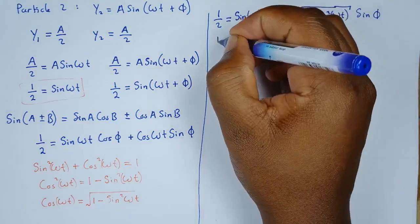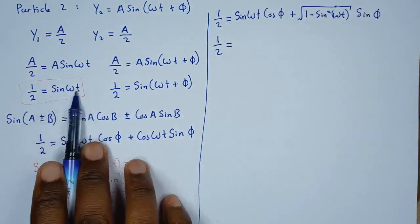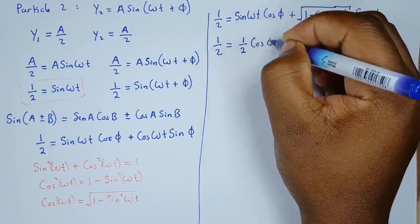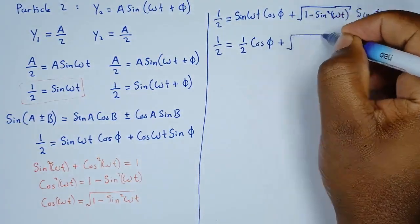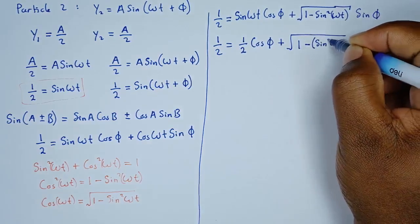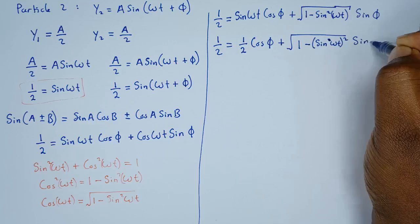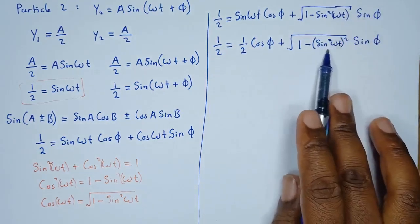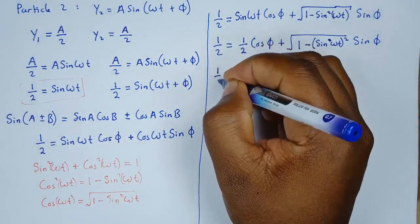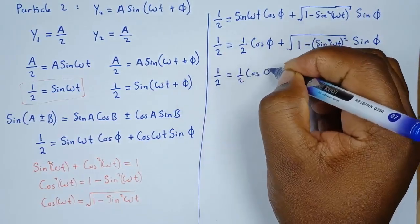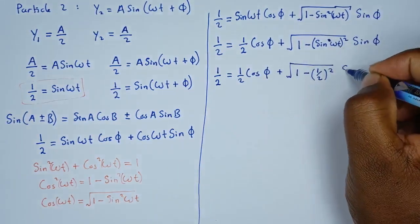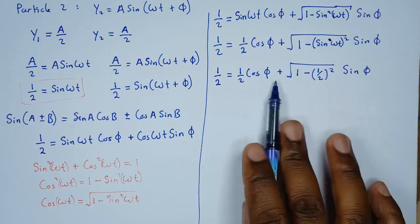Making the substitutions: sin(ωt) = 1/2 and cos(ωt) = √(1 − sin²(ωt)). Since sin(ωt) = 1/2, we replace sin²(ωt) with (1/2)² = 1/4. The equation becomes: 1/2 = (1/2)cos(φ) + √(1 − 1/4)·sin(φ). The whole reason we're doing this is to remain with φ as the only unknown.